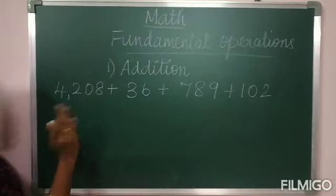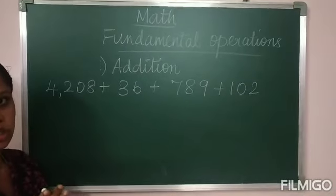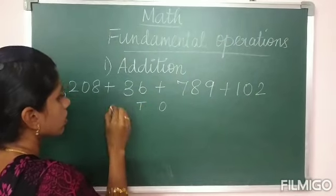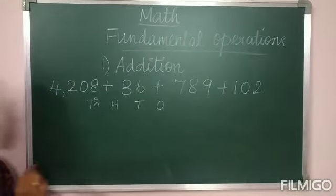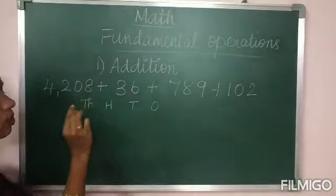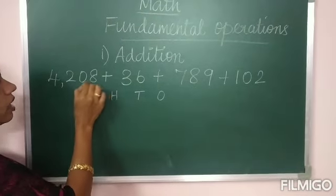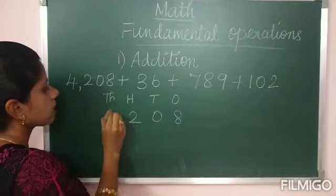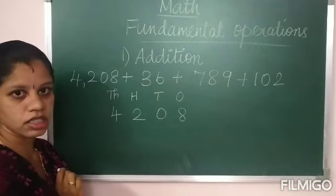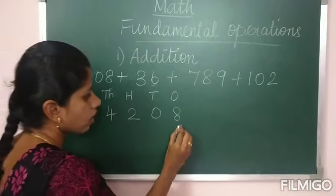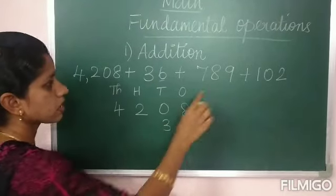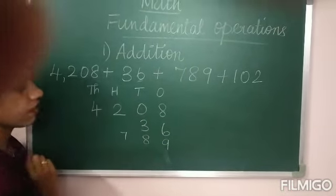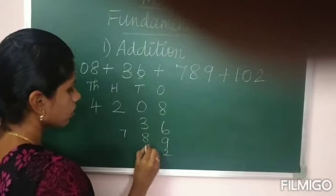Which is the highest number? 4208 is the greatest number with 4 digits, so place values go from ones up to thousands. Always while writing, start from the back side: 8 in ones place, 0 in tens place, 2 in hundreds place, and 4 in thousands place. For 36: 6 in ones place, 3 in tens place. For 789: 9, 8, 7. For 102: 2, 0, 1.